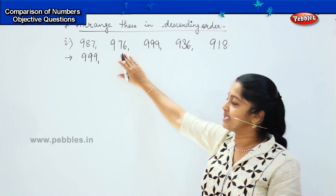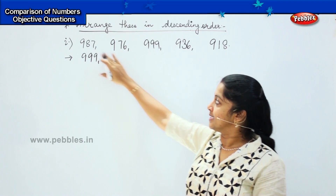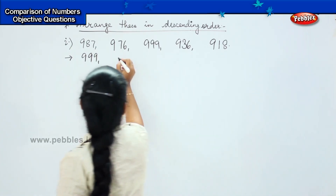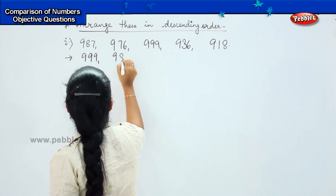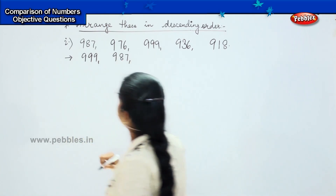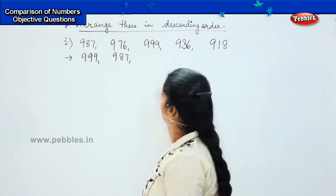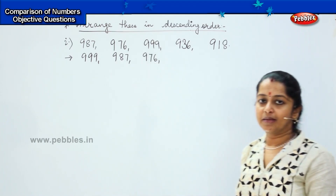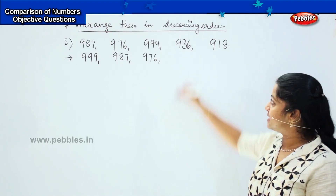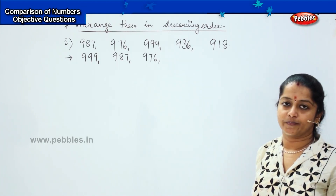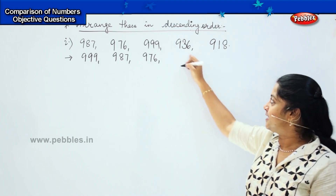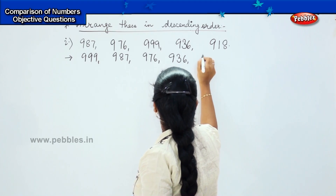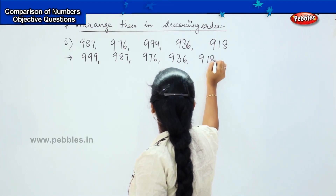Is it 976? No. Is it 987? Yes. So 987 will come next to 999. After 987, the next number will be 976. Tell me the number which will come next — is it 936 or 918? It is 936. So 936, and finally it is 918.